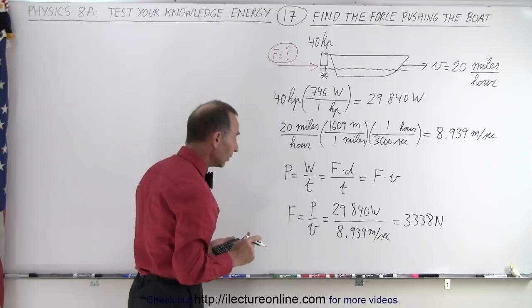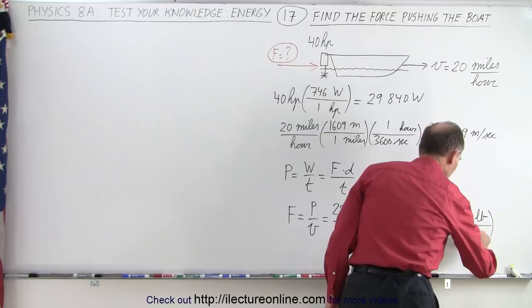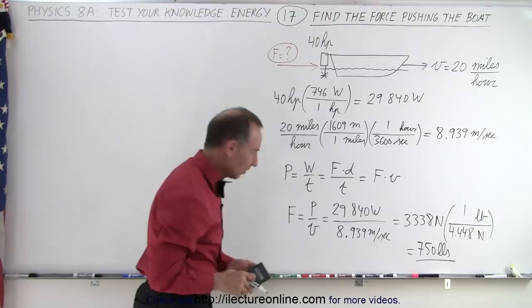Now let's say we wanted that in terms of pounds. The conversion to pounds is we have newtons in the denominator, pounds in the numerator. One pound is 4.448 newtons. Divide by 4.448 and we get 750 pounds of force.